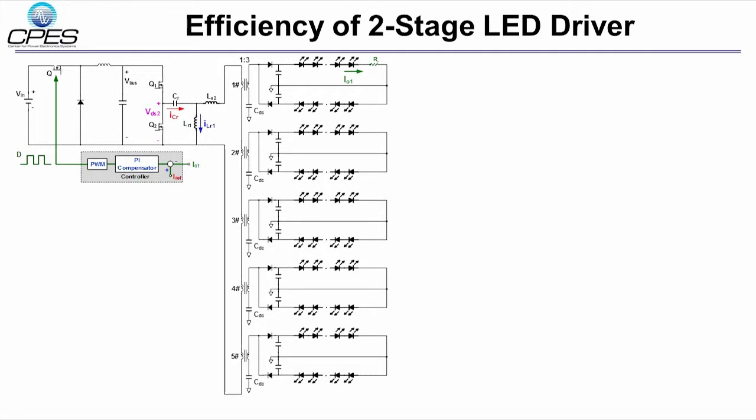For CLL resonant converter, ZVS of Q1 and Q2 is very critical to achieve high efficiency. LR1 is designed properly, so the current flowing through LR1 can help Q1 and Q2 achieve ZVS during dead time.